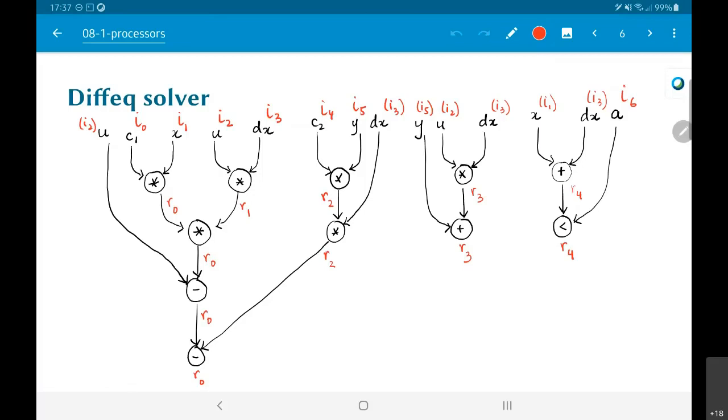Most likely it might be a register. Or it might also just be a wire, which basically holds the value of the multiplication output. And similarly, we have R1, which is the output of U into DX.